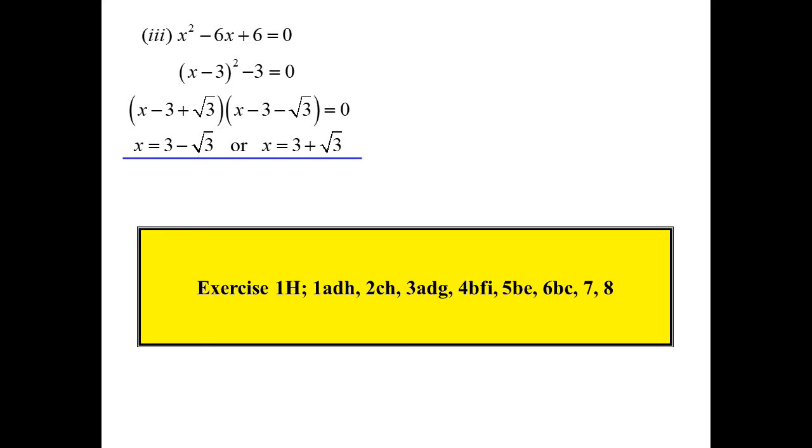I now have the difference of two squares. I can factorise it. x minus 3 plus root 3, x minus 3 minus root 3 equals 0. Therefore x is 3 minus root 3 or x is 3 plus root 3. An alternative way of thinking about completing the square. Okay, that's completing the square.